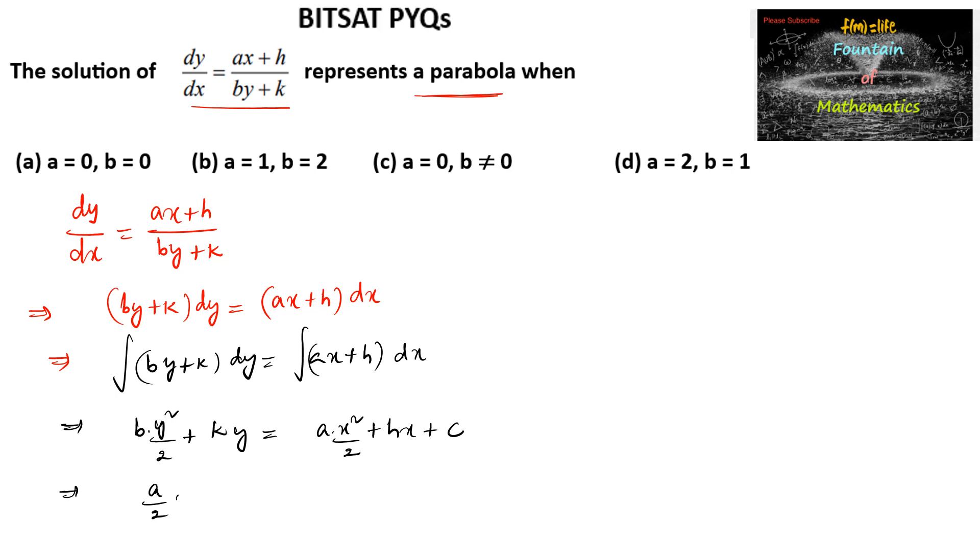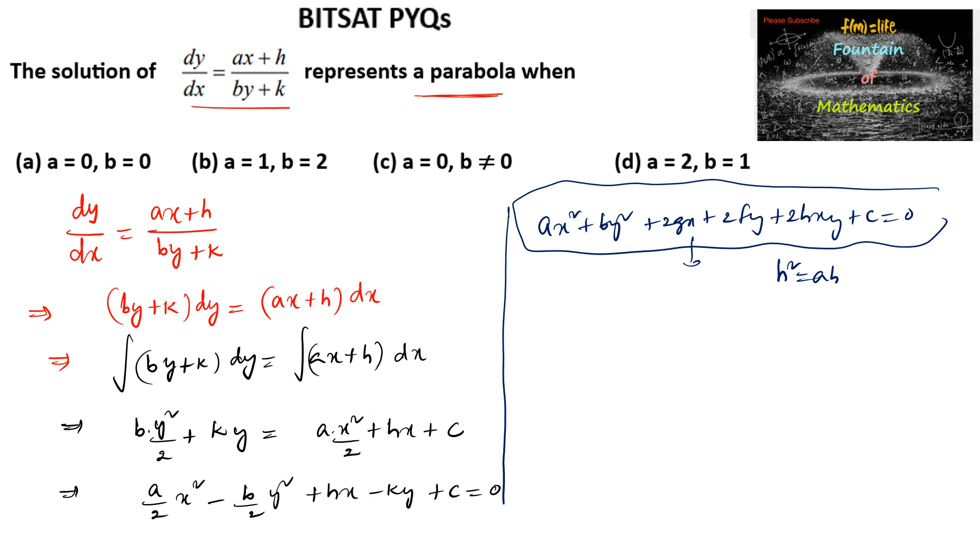Here we can write a upon 2 x square minus b upon 2 y square plus hx minus ky plus c is equal to 0. When comparing the equation with ax square plus by square plus 2gx plus 2fy plus 2hxy plus c is equal to 0, the second degree equation represents a parabola for the condition h square is equal to ab.